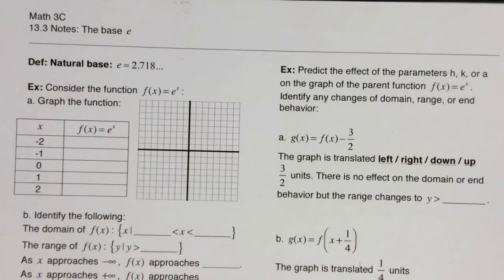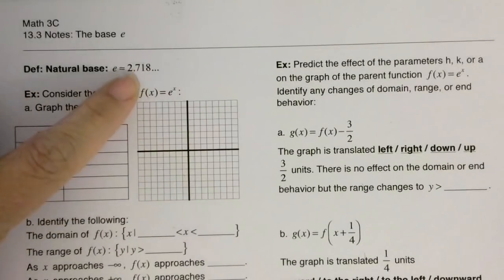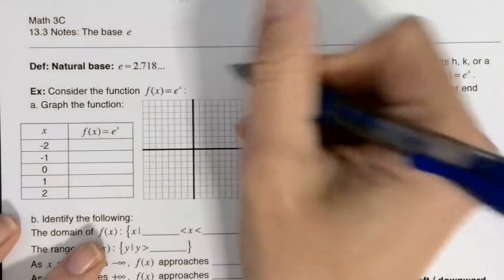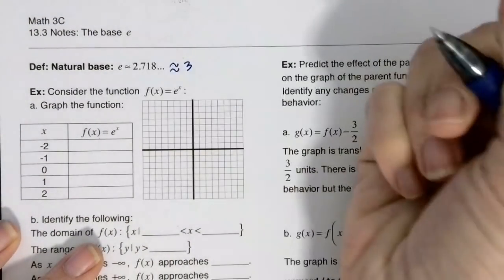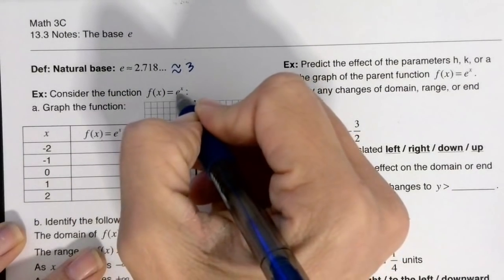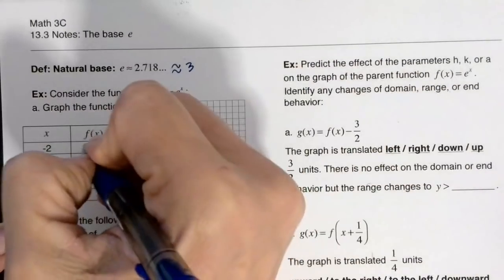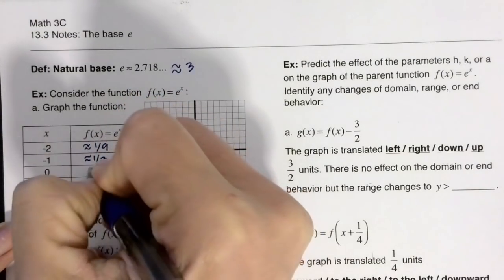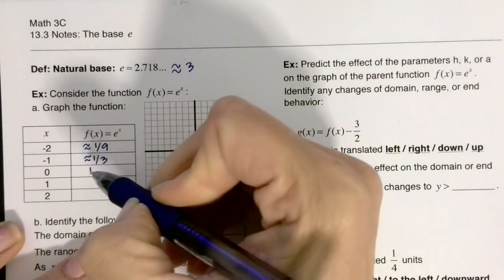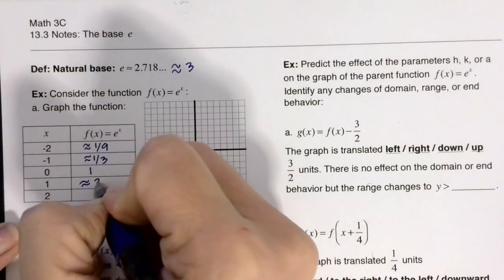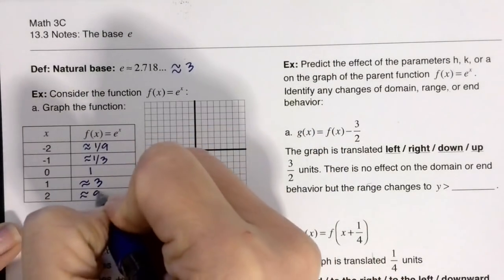So we are going to be graphing e to the x. This is an exponential growth function because our base is bigger than 1, and we are going to approximate this as 3 just so it's super easy to graph. When I plug in 3 to the negative 2, that's approximately 1/9, approximately 1/3, 1. Anything to the 0 power is 1, so 3 to the 1st power is approximately 3, and approximately 9.